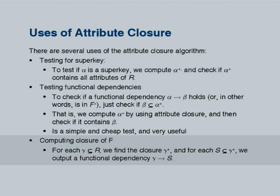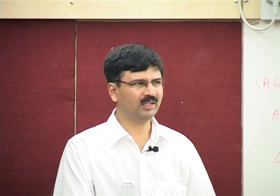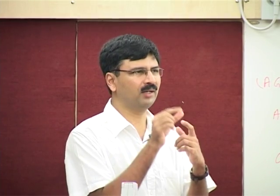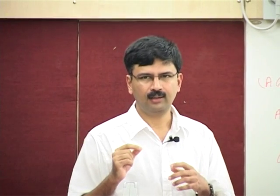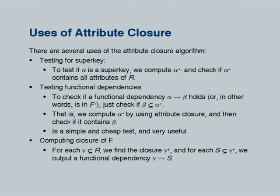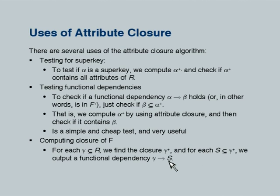If you want to compute the full closure of F, one way is to use Armstrong's axioms and keep making inferences — though doing it manually is difficult because it is hard to know when you are done. A simpler manual approach: take every subset of R, find the closure of the subset, and then for every subset of that closure add a dependency γ→S. Often it is enough just to compute closures of every subset and use those to check properties, without enumerating every dependency in F+.